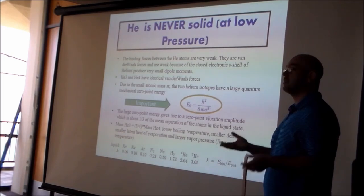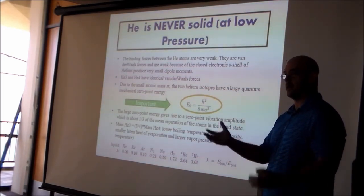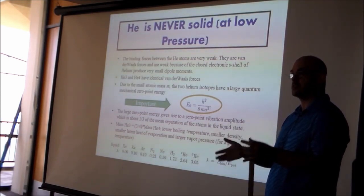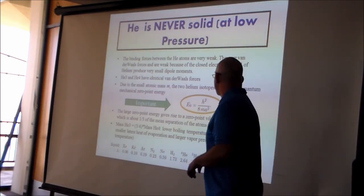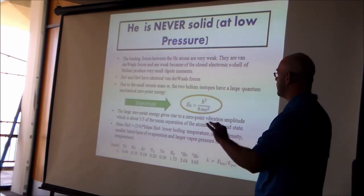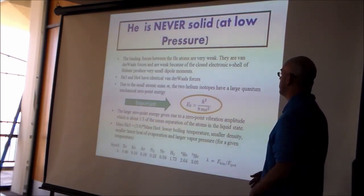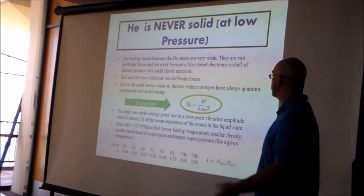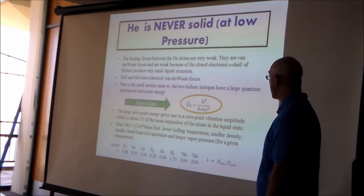Helium can never become a solid because even if you remove all the temperature from it, the helium atoms are vibrating back and forth so much due to zero-point energy that they cannot form a solid — helium melts under its own zero-point energy. This zero-point vibrational amplitude is about one-third of the mean atomic separation in liquid helium. Since the mass of helium-3 is smaller than that of helium-4, helium-3 has a bigger zero-point energy.